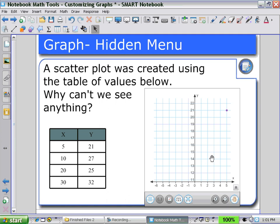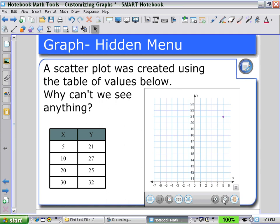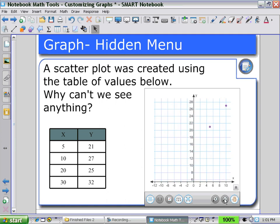And then I could use my magnifying glass with the negative sign to zoom out until all four points appear on the grid.